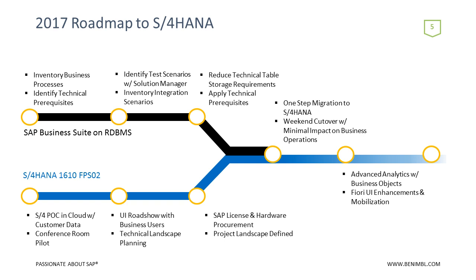Up top on the roadmap, I talk about using Solution Manager — naturally, we wrote the Solution Manager book and eat our own dog food. We have Solution Manager here as part of our Certified Center of Excellence at Nimble. You can use Solution Manager to reverse-document your business processes in ERP, define your test scenarios, and help find and reduce technical table storage such as IDOC logs and workflow logs. You can then buy S4, run S4 for your project, and make the one-step upgrade and migration. This is a high-level roadmap of how you can get this done effectively and efficiently.